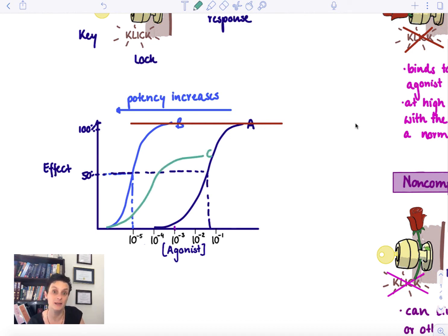Let me draw in a drug with a lower efficacy. That would look like something like this. Drug C's maximum effect is about 60%. Drug C has here from all of those drugs the lowest efficacy.